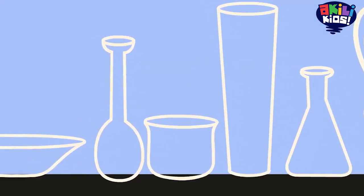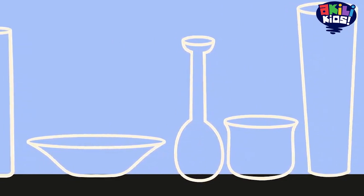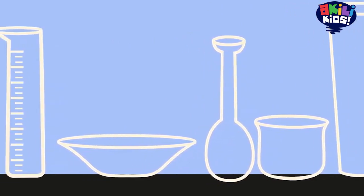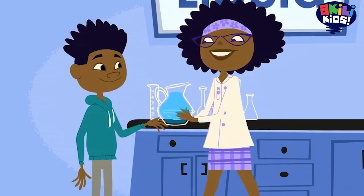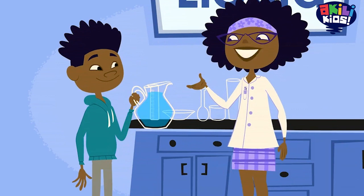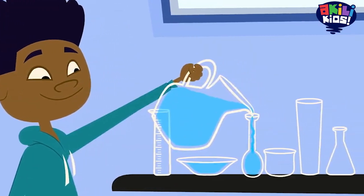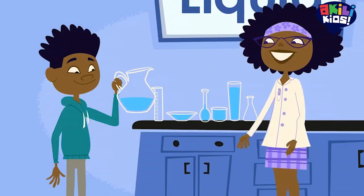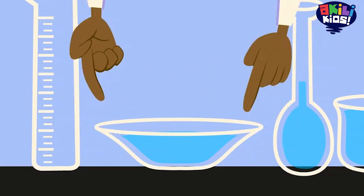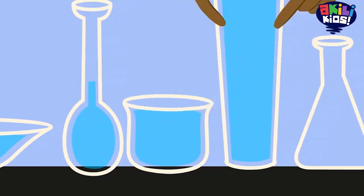Look at these containers — glasses, cups, bowls, pans, vases — all different sizes and shapes. Solid matter keeps its shape, but watch what happens to the shape of this water when Lester pours it into these containers. Liquid matter, like this water, changes its shape to match the container it's in.